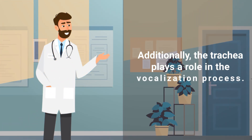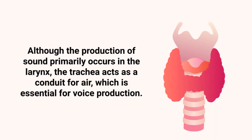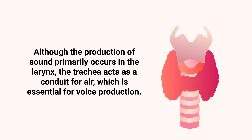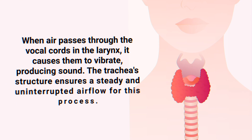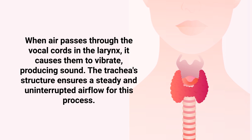Additionally, the trachea plays a role in the vocalization process. Although the production of sound primarily occurs in the larynx, the trachea acts as a conduit for air, which is essential for voice production. When air passes through the vocal cords in the larynx, it causes them to vibrate, producing sound. The trachea's structure ensures a steady and uninterrupted airflow for this process.